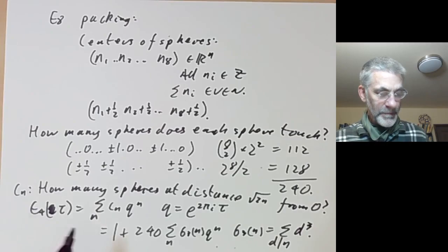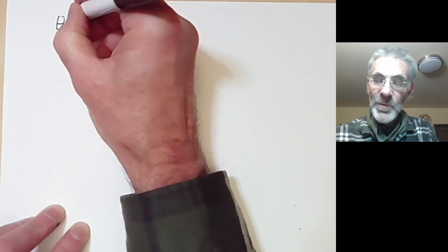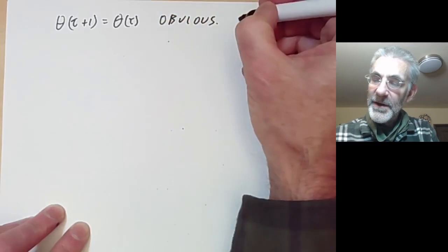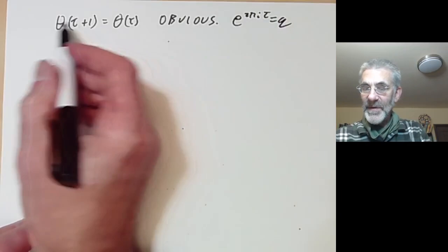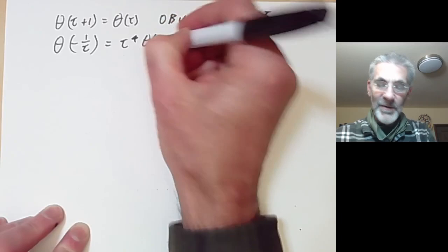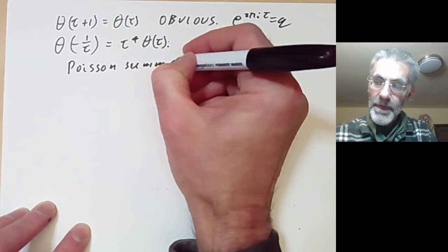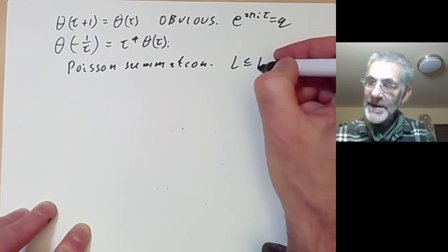So what is a modular form? If we look at E4(τ) — writing it as θ(τ), the theta function of the E8 lattice — it has the following properties: θ(τ + 1) = θ(τ), which is obvious because it's a function of q = e^(2πiτ). There's a much less obvious transformation: θ(−1/τ) = τ^4 · θ(τ). Why is this true? It comes from the Poisson summation formula.